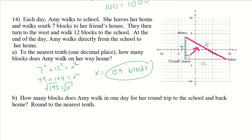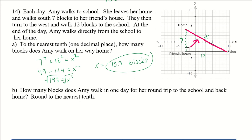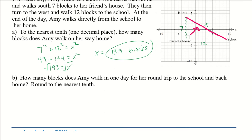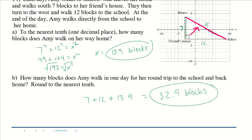For part B, how many blocks does Amy walk in one day for her round trip? She first walks 7, then 12, then 13.9. Adding all of those together, she walks 32.9 blocks total. That's the end of 7.1. Make sure to watch this as many times as needed. If you need any help, please ask the teacher. Have a wonderful rest of your day.